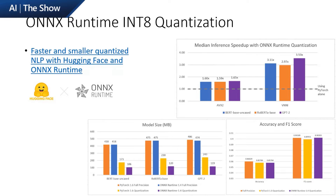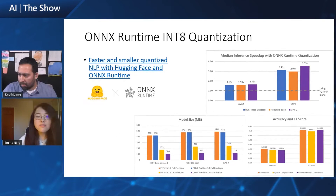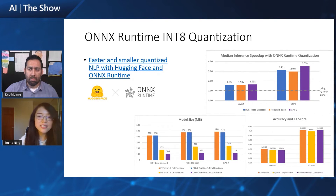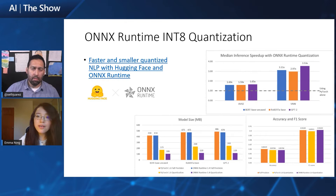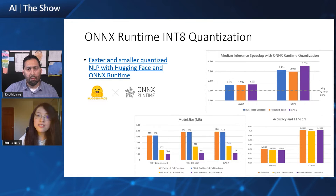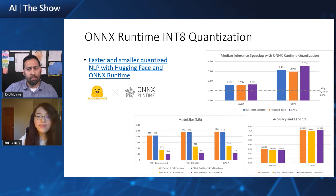Accuracy is also important in the evaluation. Smaller and faster is great, but we also need to make sure the model is returning good results. Given that accuracy is task-specific, we took a fine-tuned BERT model for the MRPC task for accuracy benchmarking. MRPC is a common NLP task for paraphrase classification. Compared to PyTorch quantization, even with a smaller model, ONNX Runtime quantization showed the same accuracy and a slightly higher F1 score.